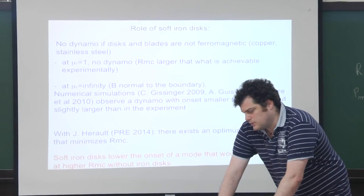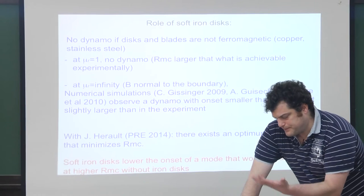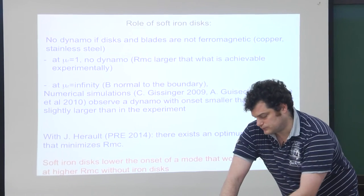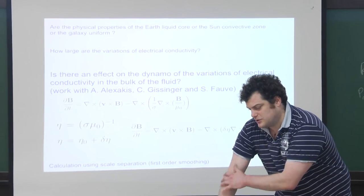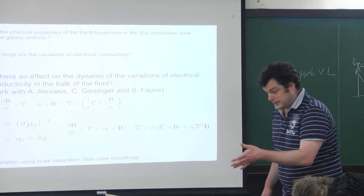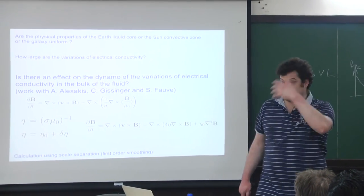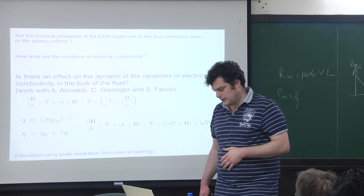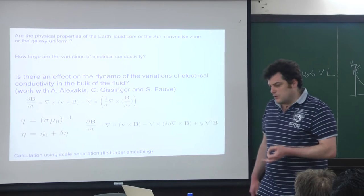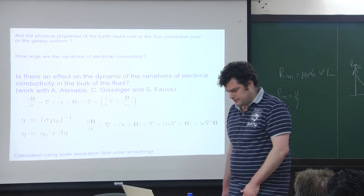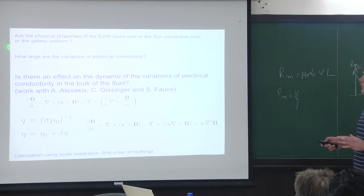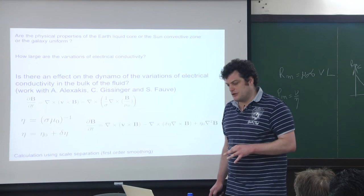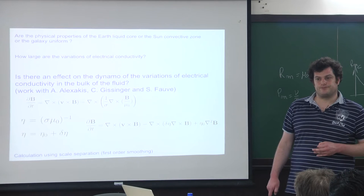Going beyond VKS, we ask: what do you expect for a dynamo when physical properties of the fluid are non-homogeneous? The physical properties of the Earth's liquid core, the solar convective zone, and galaxies are clearly not uniform — temperature in a galaxy can fluctuate by four orders of magnitude. Work involving Alexandros, Christoph Gissinger, and Stefan Po addresses the effect of varying electrical conductivity. Writing η = η₀ + δη in the induction equation gives a modified dynamo equation — the usual induction equation plus a new term representing the effect of variable electrical conductivity.